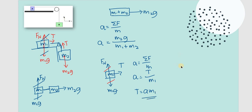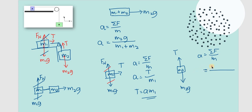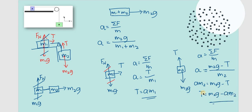Using M2 instead: you have tension and M2G acting on M2. M2G pulls it downward, so A = (M2G − T) / M2. Rearranging: AM2 = M2G − T, therefore T = M2G − AM2. If you use the M1 system, you get T = AM1. Both give the same tension.